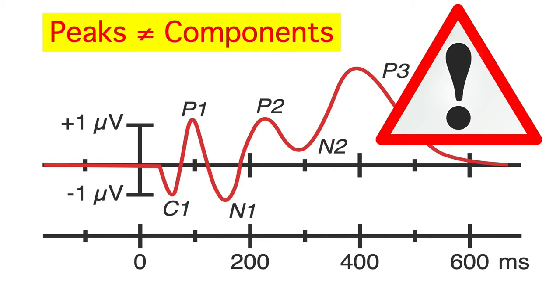Peaks are things that we can observe in our scalp recordings, whereas components occur in the brain and can't be directly observed from scalp electrodes. The observed peaks are the result of the underlying brain components, but the relationship can be complex.